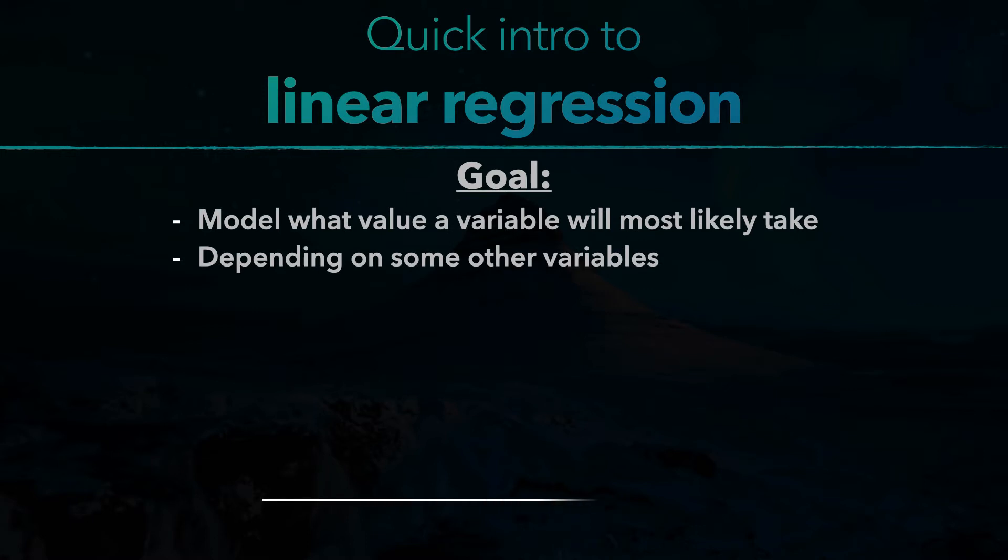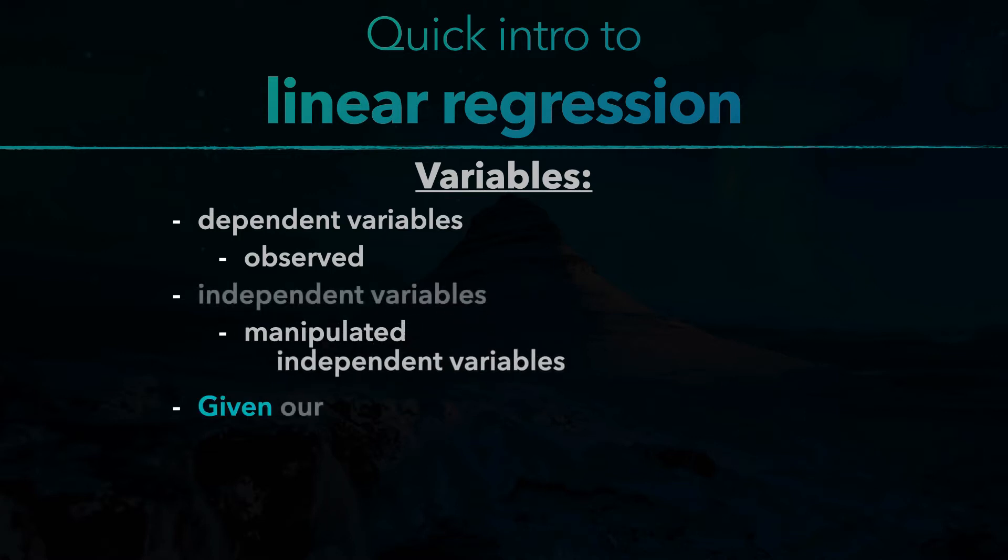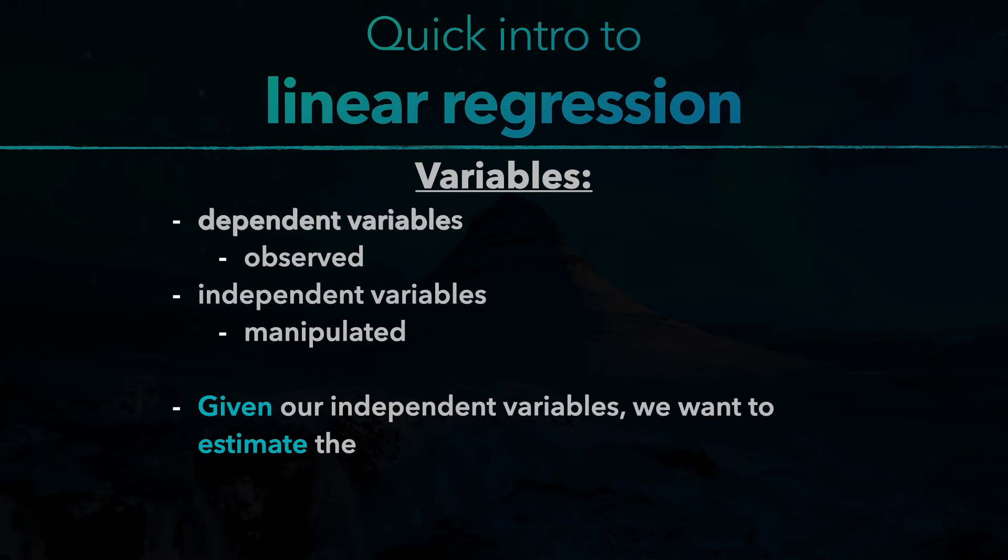So when given x and as many other variables as we need, we want to estimate what value y will take. There are two different kinds of variables. The first kind are the dependent variables, which we can also call observed variables. And the second one are independent variables, which we can also call manipulated variables. When we are given the independent variables, we want to estimate the value of the dependent variable.